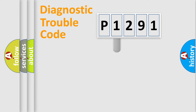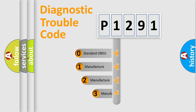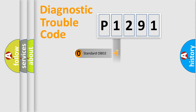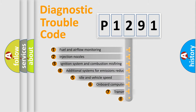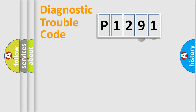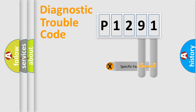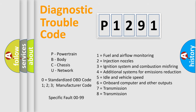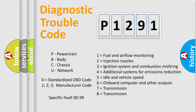This distribution is defined in the first character of the code. If the second character is expressed as zero, it is a standardized error. In the case of numbers 1, 2, or 3, it is a manufacturer-specific error. The third character specifies a subset of errors, and this division is valid only for the standardized DTC code. Only the last two characters define the specific fault of the group, and this division applies only when the second character is zero.